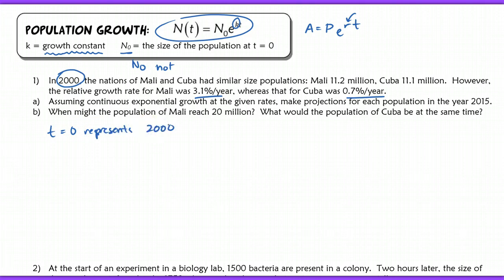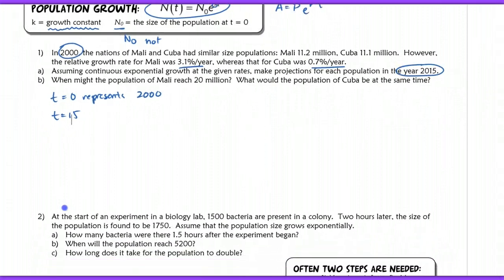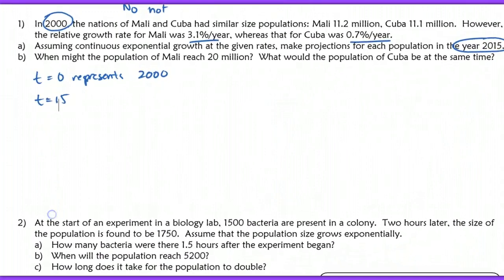What we're going to do then is say, if it's 2015 that we're trying to make projections for, we're going to let T equal 15 for both. The exponential growth model is going to be different for each of these because the growth constant is different. That K value is going to be different for each one. So we start, let's do Mali's.